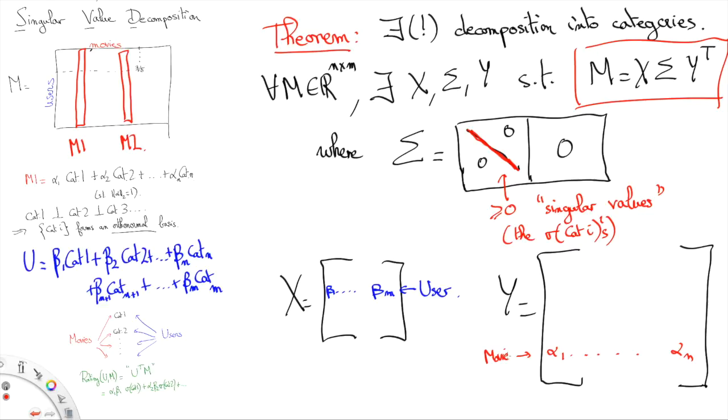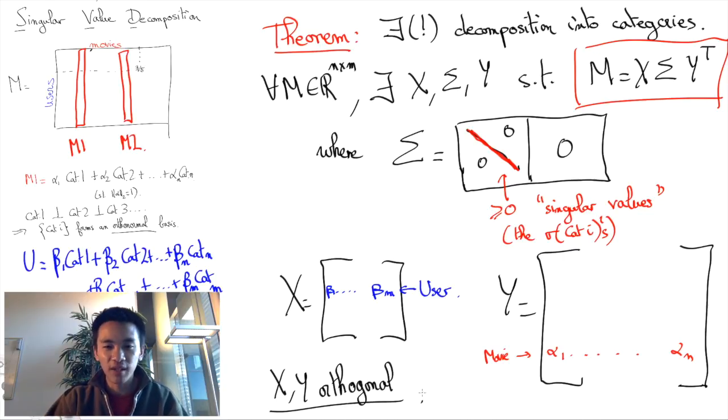Actually we demand slightly more than that, but basically this boils down to saying that the matrices X and Y need to be orthogonal matrices.